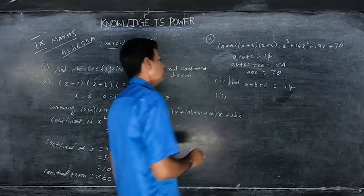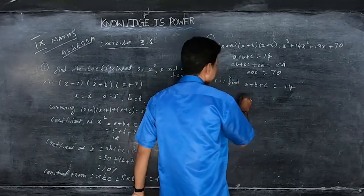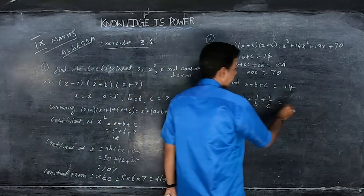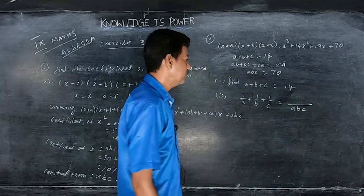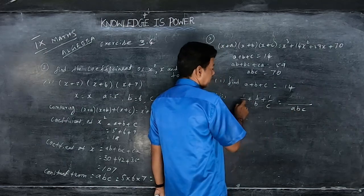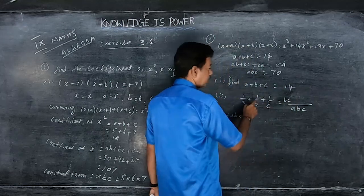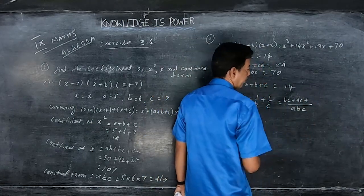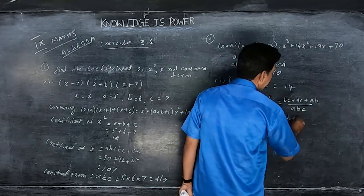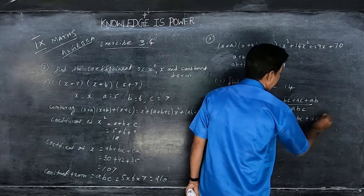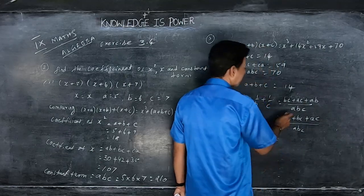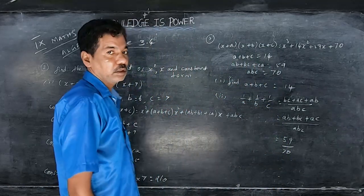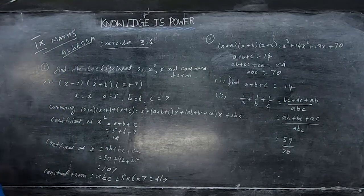So 1/a + 1/b + 1/c: take abc as denominator; in the numerator, a's term gives bc, b's term gives ac, c's term gives ab — arranged as ab+bc+ca, divided by abc. That is 59/70. Just think logically and it will be easy to follow.